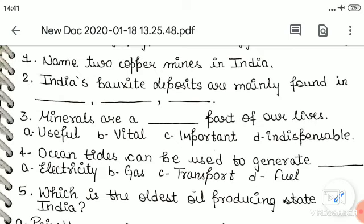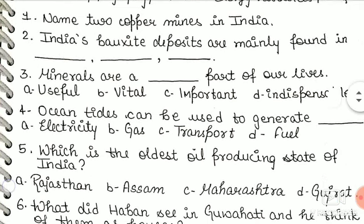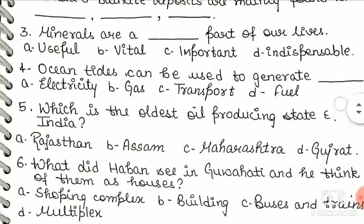Question four: ocean tides can be used to generate — first option: electricity, second option: gas, third option: transport, fourth option: fuel. Question five: which is the oldest oil-producing state of India? Options: Rajasthan, Assam, Maharashtra, or Gujarat.